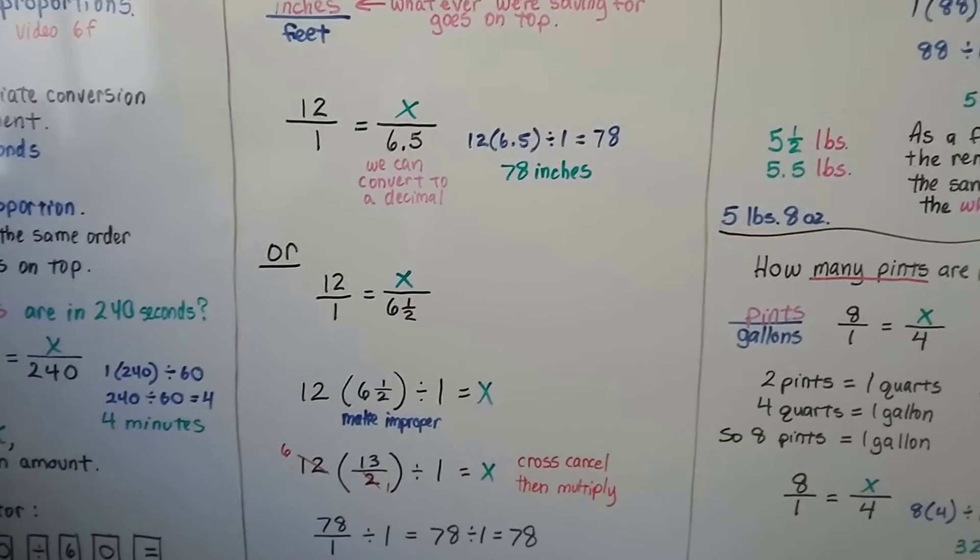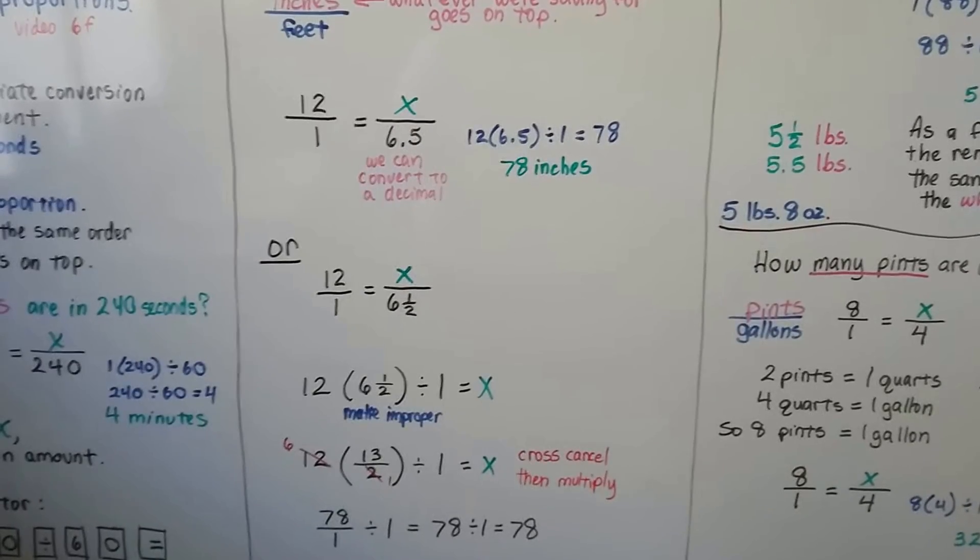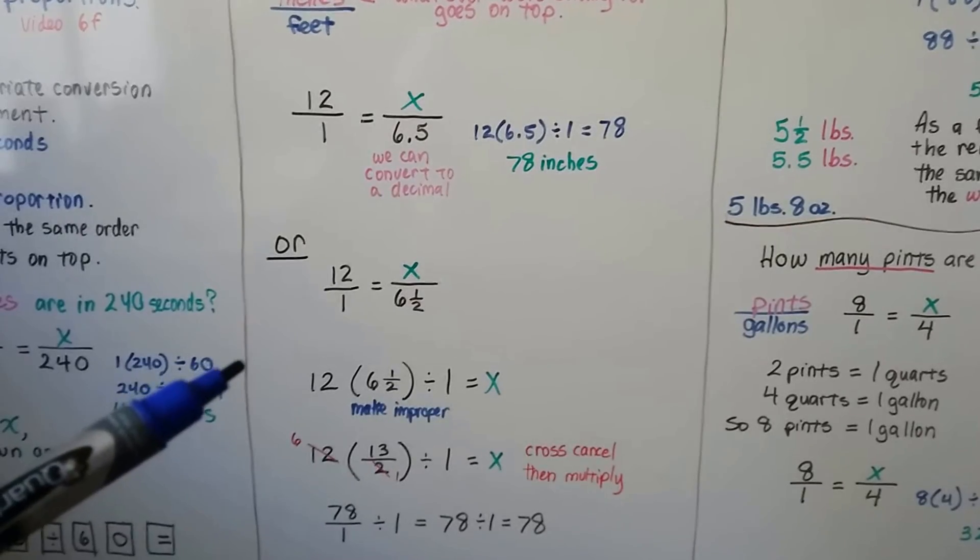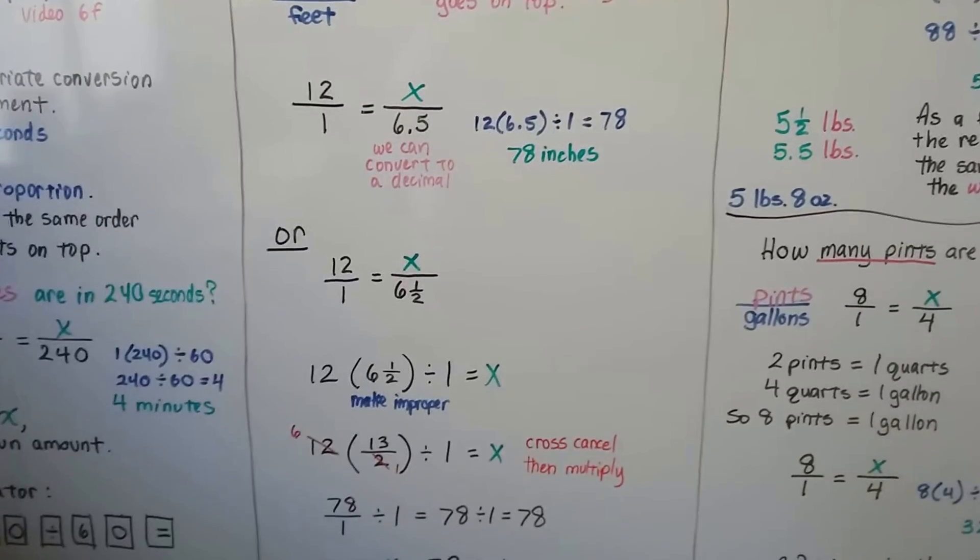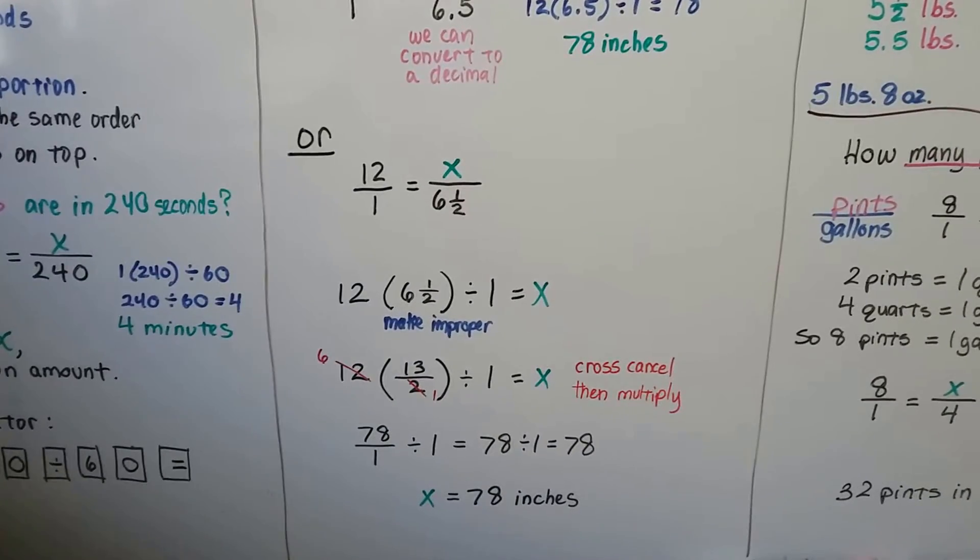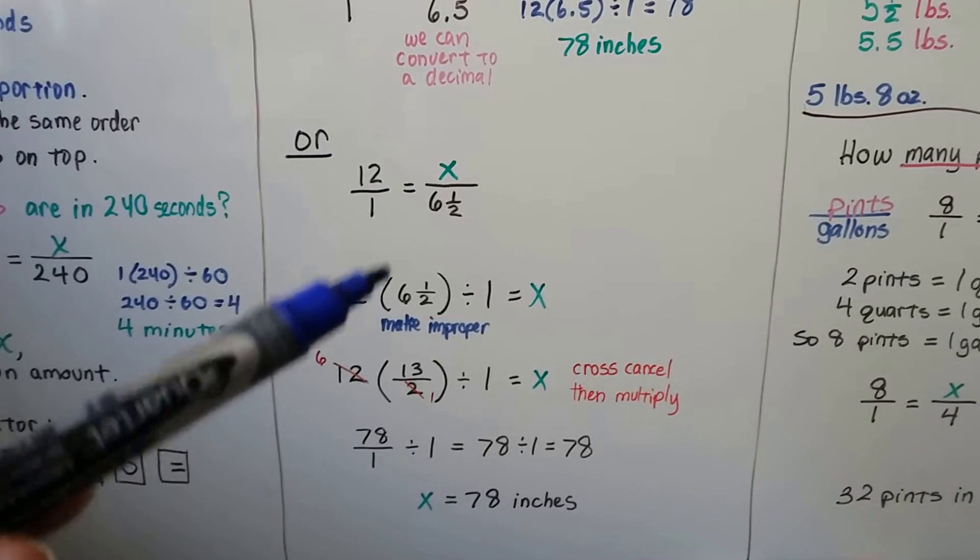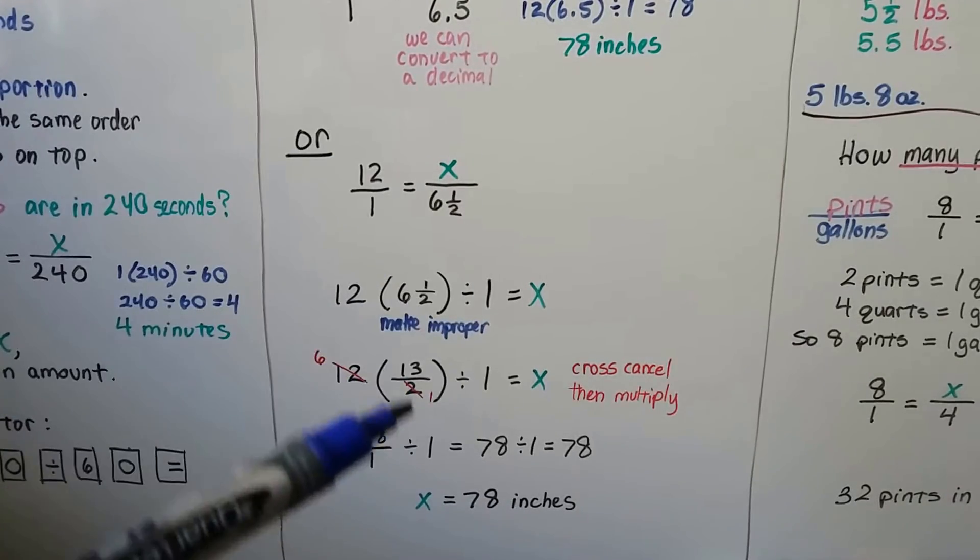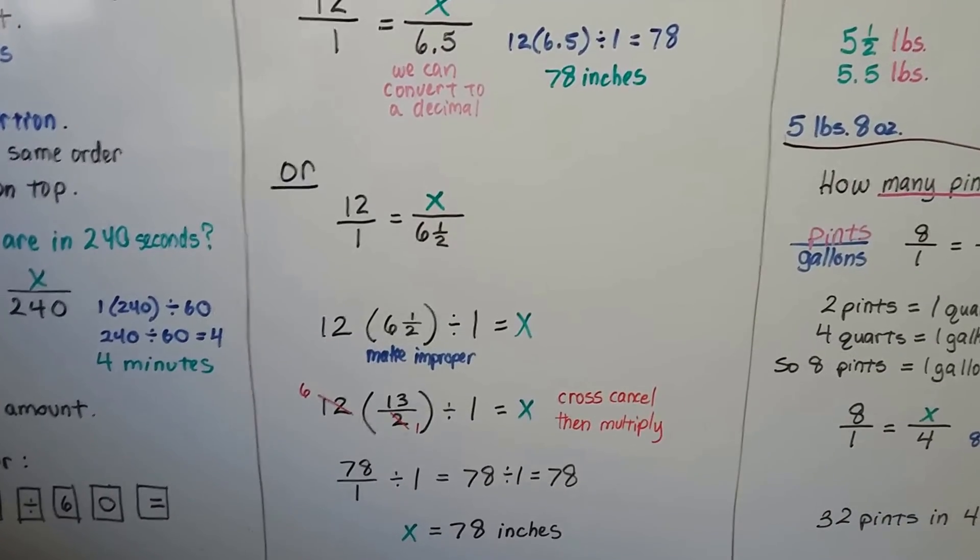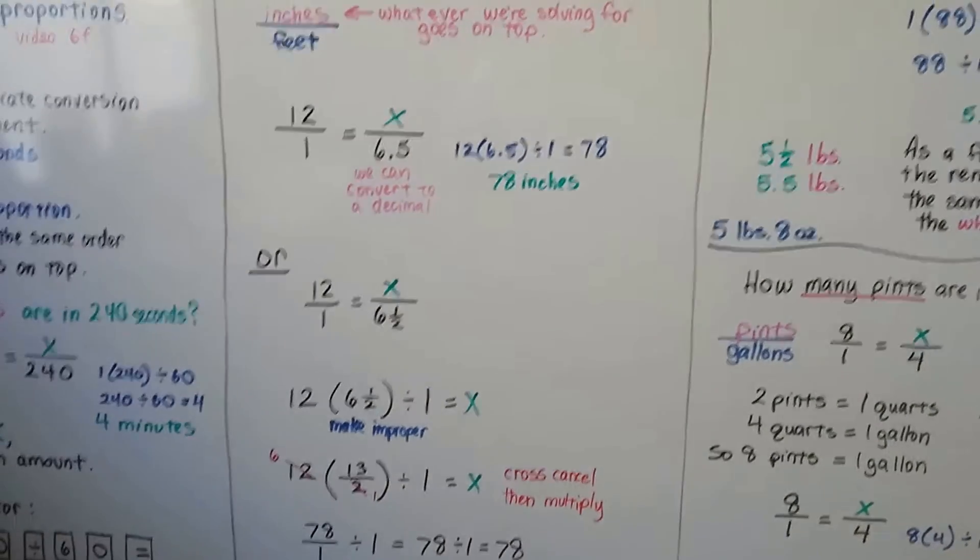If it's something like 1⁄4, that's easy. We know that's .25. Like in money, it's a quarter of a dollar. If it's 3⁄4, that's easy also. That's .75. So that could be done as a decimal very quickly. If it's a weird fraction like 9 21sts or 5 18ths, then keep it as a fraction and do it this way. Turn it into an improper fraction and then cancel if you can and find the solution. So it's going to depend on what the problem is that's going to make you decide which way to go.